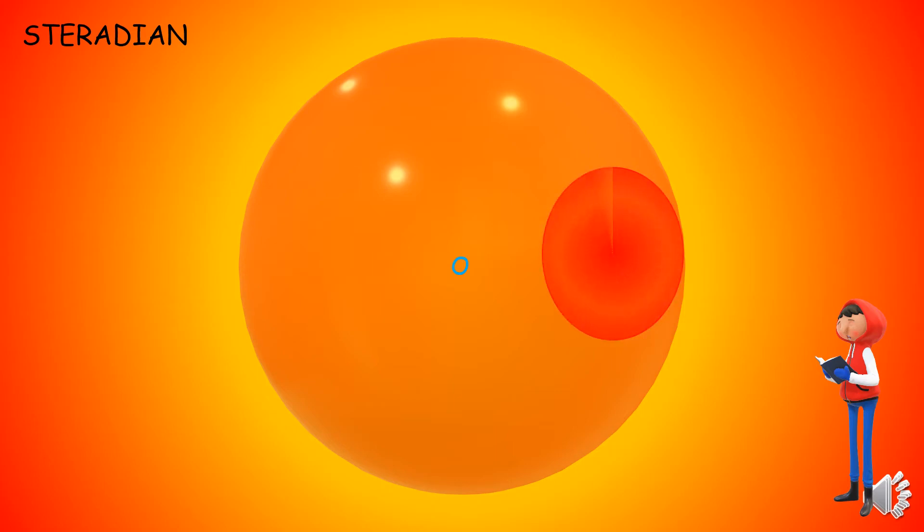Now draw a circle on the surface of the sphere. Now we rotate this sphere a little bit to understand Steradian clearly. When we rotate this sphere, you can observe that the circle which we have drawn on the surface of the sphere behaves like a cone.